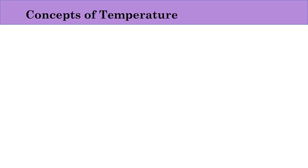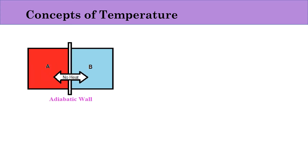First, let us understand temperature. For this we will consider two systems, say system A and system B. System A has thermodynamic properties P1, V1, T1, and system B has thermodynamic properties P2, V2, T2.